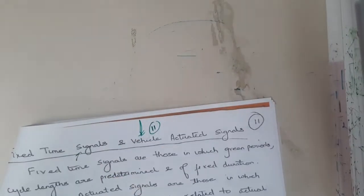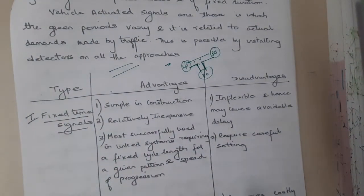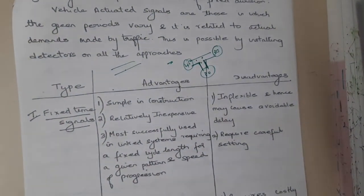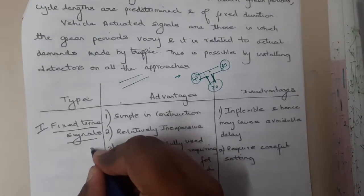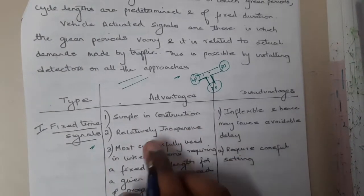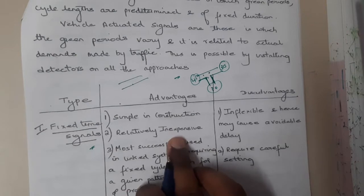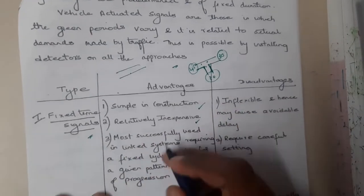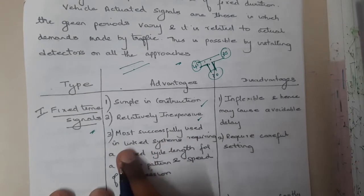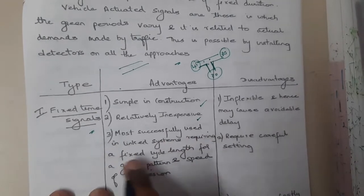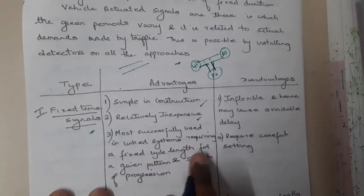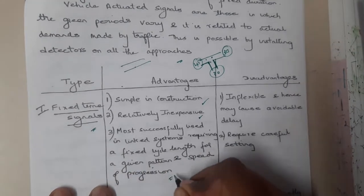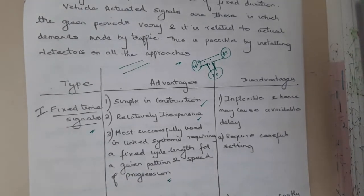Fixed time signals are simple to construct, relatively inexpensive - there is no need of any sensors or anything. Most successfully used in linked systems, requires a fixed cycle length for a given time or pattern. Most of the situations, this is a better approach.